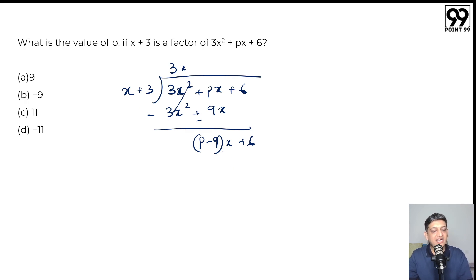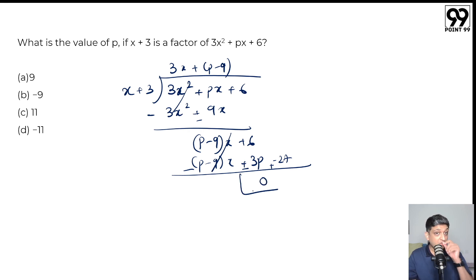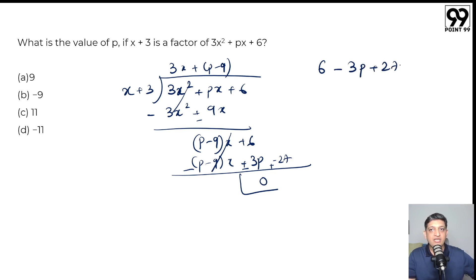Now I have to eliminate x as well, so I have p minus 9 here and I multiply by p minus 9. Because of this I get p minus 9 times x, but 3 will now be multiplied giving me 3p minus 27. When I subtract, these go away and if I shuffle the terms I should get the sum as 0 because x plus 3 divides 3x² plus px plus 6 entirely. So I get 6 minus 3p plus 27 equals 0, giving 3p equals 33, so the value of p equals 11.